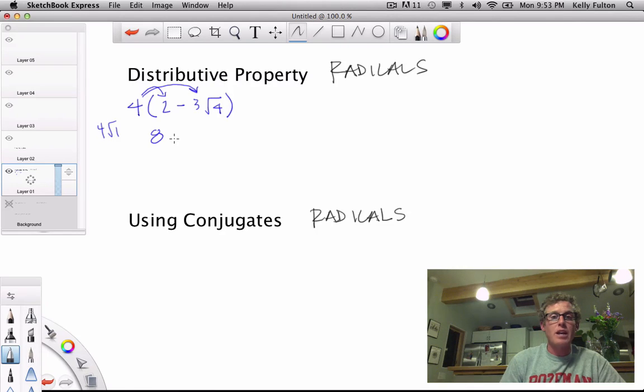So what that means is I'm going to have minus and then 4 times 3, which is 12, and then root 4. And then from here we always say, well, what is the square root of 4?